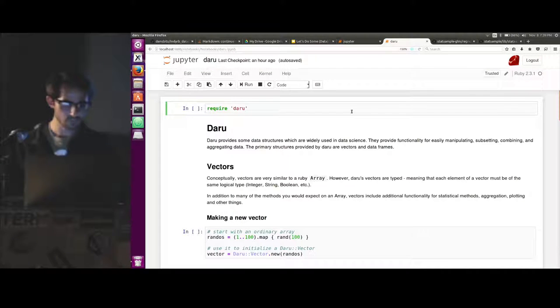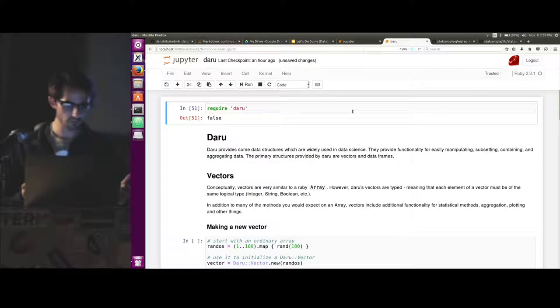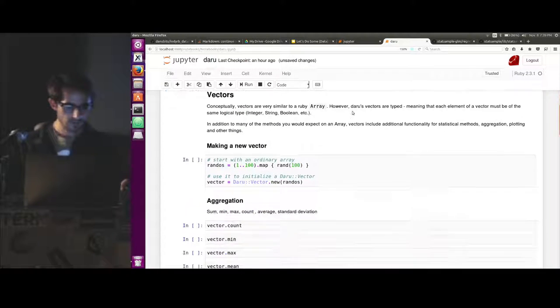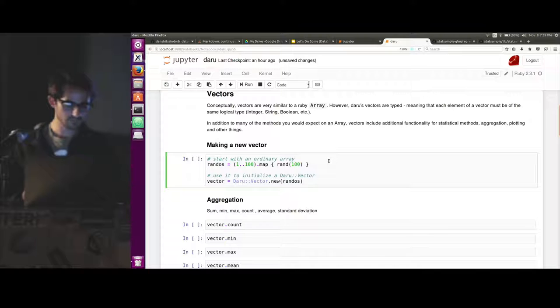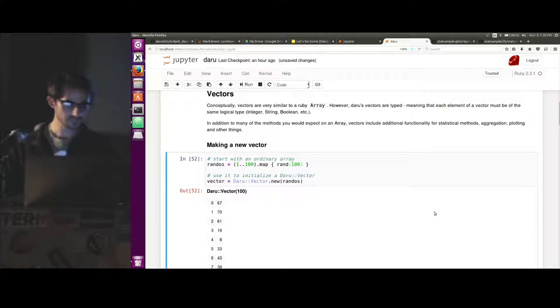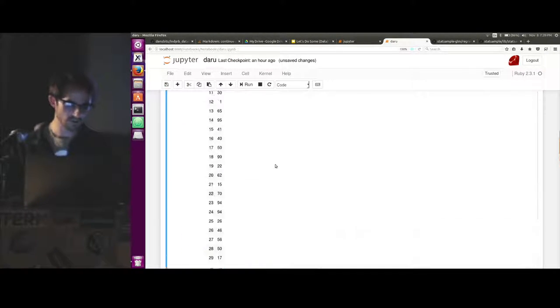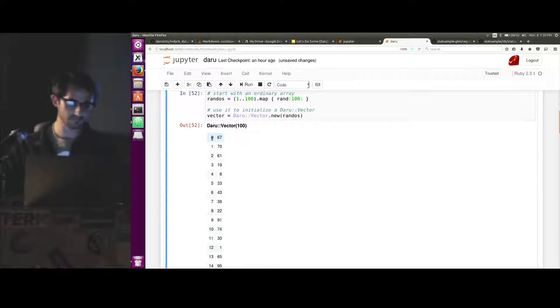So we have our Jupyter notebook here. And we can require Daru. And let's make a new vector. Realistically, I almost never create a new vector by itself. It's almost always in the context of the data frame. But if you wanted to, you could just pass it in an array. So in this case, I'm creating a hundred random numbers between one and a hundred. And assigning them to a vector. So we have our hundred random numbers. Notice the number on the left here is the index for the number in the vector.